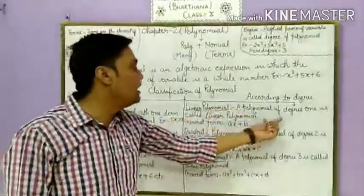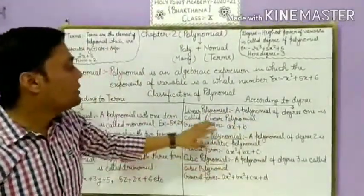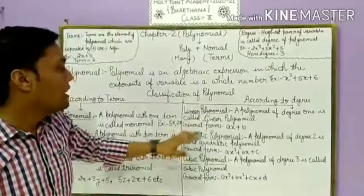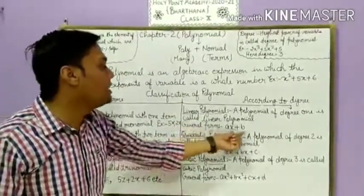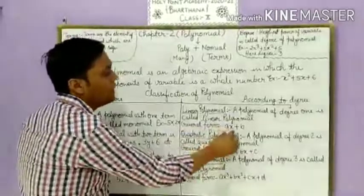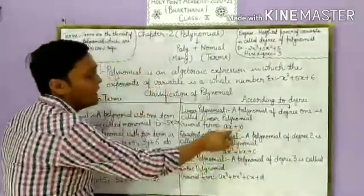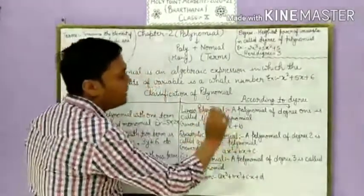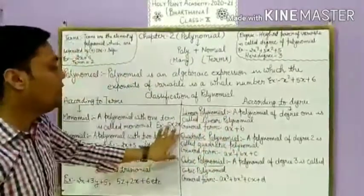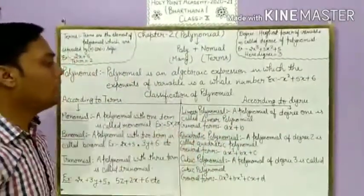Now, classification of polynomials according to degree. A polynomial of degree one is called a linear polynomial. The general form of a linear polynomial is ax plus b. Here the variable x has degree one, that is why it is called a linear polynomial.